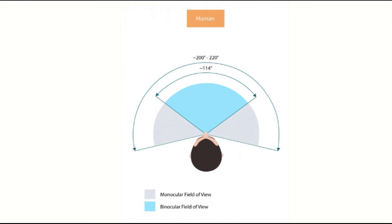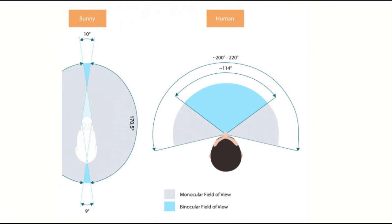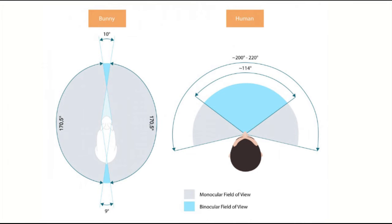Our total field of view is about 200 to 220 degrees. We don't see anything behind us. We take this for granted, but bunnies for example have an almost 360 degree field of view, mostly monocular.